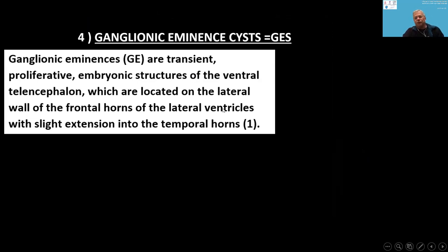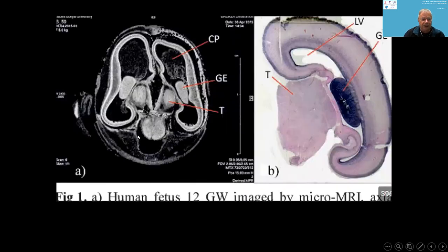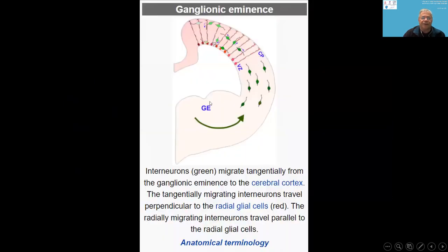The fourth and most complicated group is the ganglionic eminence (GE) cysts. The ganglionic eminence are transient proliferative embryonic structures of the ventral telencephalon, located on the lateral wall of the frontal horns of the lateral ventricles, with slight extension into the temporal horns. Cells from the ganglionic eminence travel perpendicular to the radial glial cells to create the real cortex.